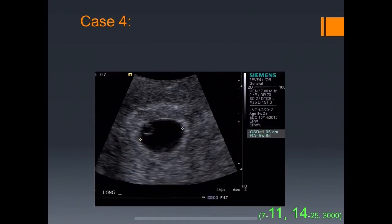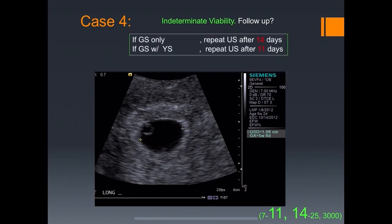Case four: intrauterine gestation with a yolk sac. This is a pregnancy of indeterminate viability, so we follow with a beta as well as repeat ultrasounds. If after 11 days on repeat ultrasound we still don't see a fetal pole with a heart rate, it's considered non-viable. If the initial ultrasound showed just a gestational sac, we wait up to 14 days before calling it non-viable.